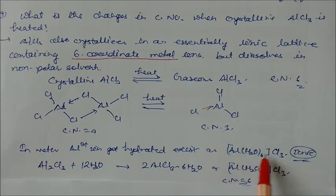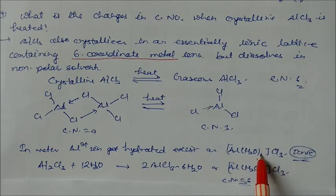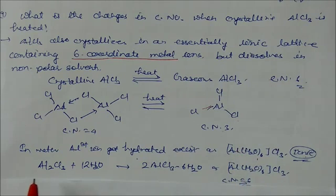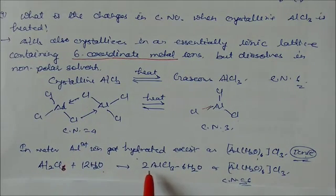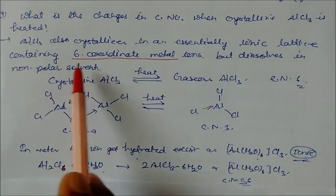In water, AlCl3 is hydrated in this form. The coordination number is 6 in ionic form where water is attached with the chlorine. Al2Cl6 in water forms AlCl3·6H2O, which has coordination number 6. That's why it contains 6 coordinate metal ions.